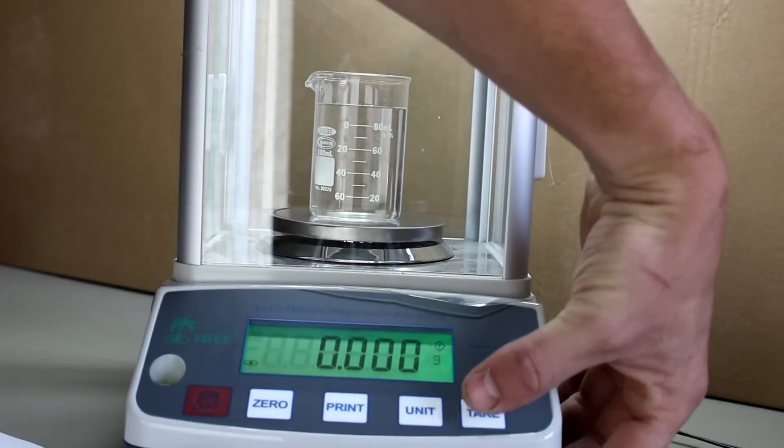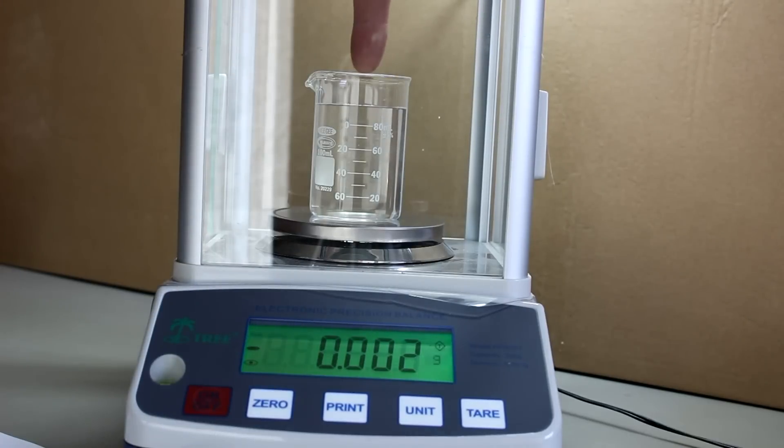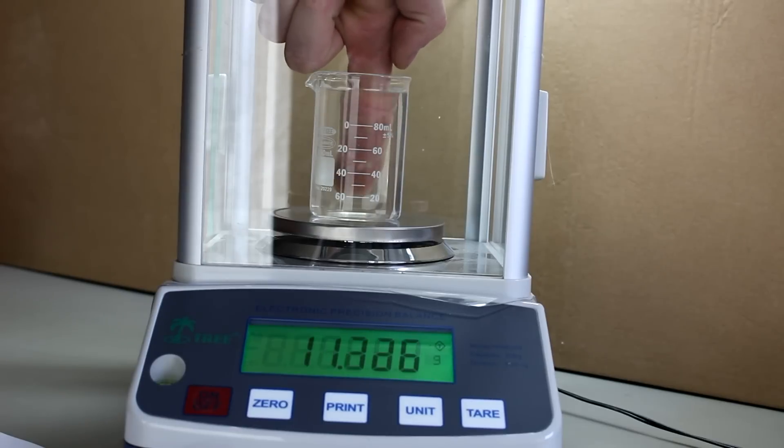If we zero the scale out and then I take my finger and stick it into the water, watch what happens. Even though I'm supporting the weight of my finger, the scale still reads an amount of weight. This is because you'll notice that the water level goes up and down. By sticking my finger in there it's as if I added extra water.